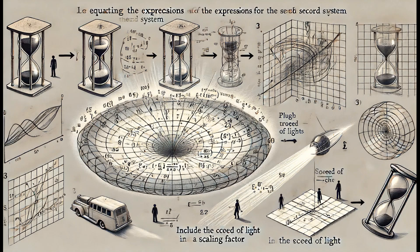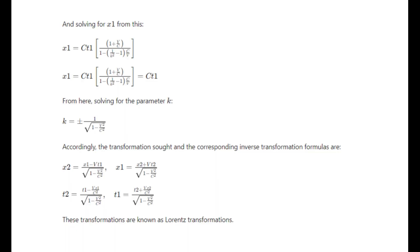By equating the expressions for the coordinates of the second system, we plug them into the initial transformation equations to find an expression for the scaling factor. This approach allows us to derive a formula that includes the speed of light and ensures that the transformations are consistent with the principle that light travels at the same speed in both systems.